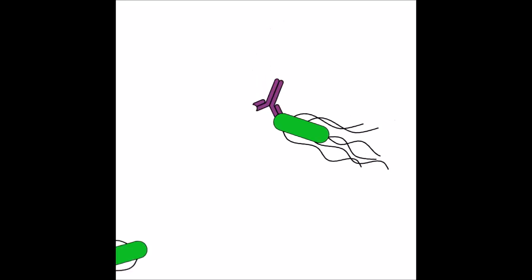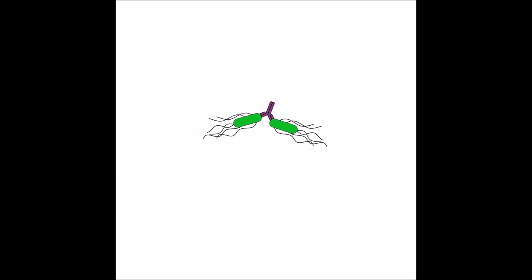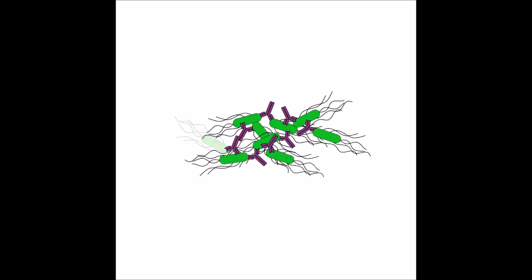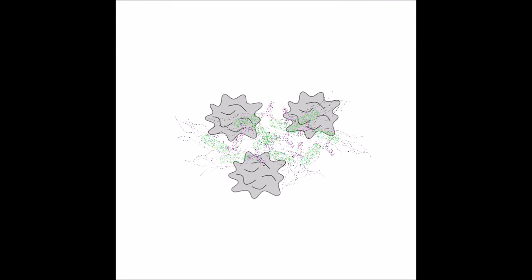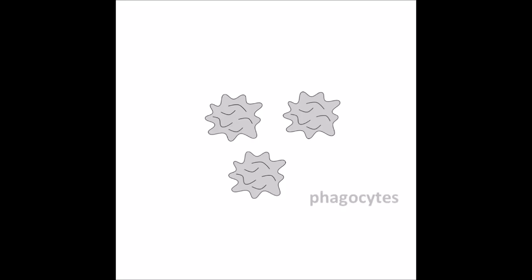Because antibodies have two arms, they can bind to two antigens at the same time. And as you can imagine, lots of antibodies binding to lots of cells can make big clumps. These big clumps can then be found and eaten up by another important player of the immune system, the phagocytes.